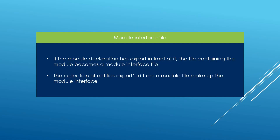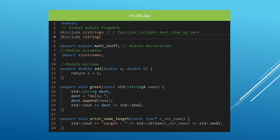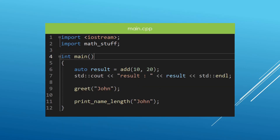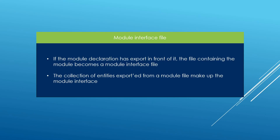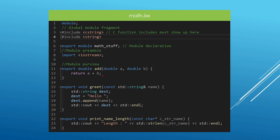A few facts before we try and run this code. If a module declaration has an export in front of it, the file containing the module becomes a module interface file. Per that statement, this line makes this file a module interface unit, because it is a declaration of a new module in our C++ program. The collection of entities exported from a module file make up the module interface. So in this case, our interface is made up of three functions — add, greet, and print name length — because it is what we export from this module.